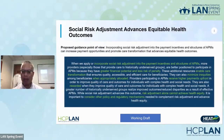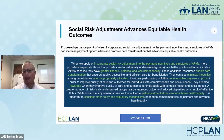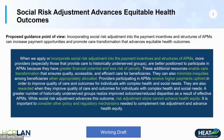Providers participating in APMs receive higher payments upfront in order to improve quality of care and outcomes for individuals with complex health and social needs. They are also rewarded when they improve quality of care and outcomes for those individuals. A greater number of historically underserved groups realize improved outcomes and reduced disparities as a result of effective APMs. While social risk adjustment advances this outcome, risk adjustment alone cannot achieve health equity — it is important to consider other policy and regulatory mechanisms needed to complement risk adjustment.